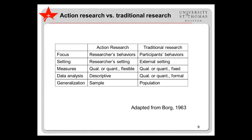In his book, Educational Research and Introduction, Borg presents a table that distinguishes action research from what he calls formal behavioral research. Although Borg goes into more detail, the gist of the table is that action research differs from such traditional research in a number of ways, though there are many similarities as well. In action research, the primary focus is on the researcher's behaviors — what the researcher will do to try to effect change. In traditional research, the focus is on the participants, whether or not they change, how they perform, etc. In action research, the research takes place in the researcher's setting, such as the teacher's classroom, whereas in traditional research, the researchers come into a setting and conduct the research without being involved in other activities there.